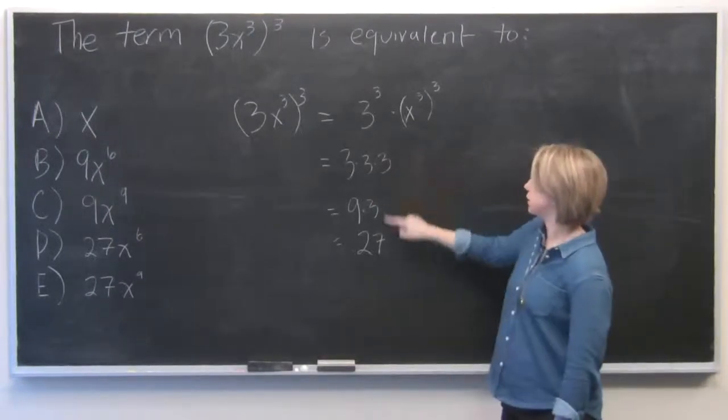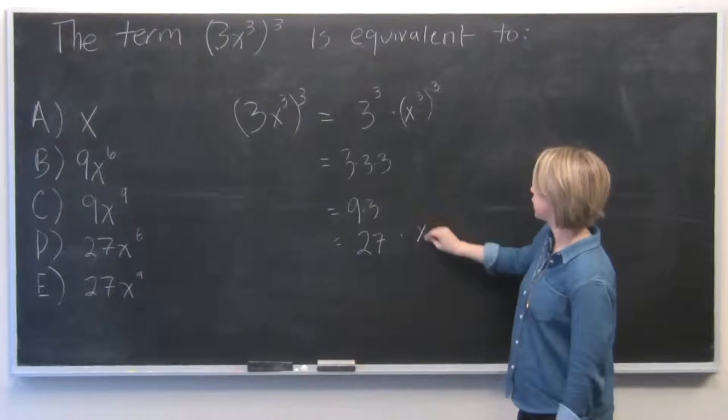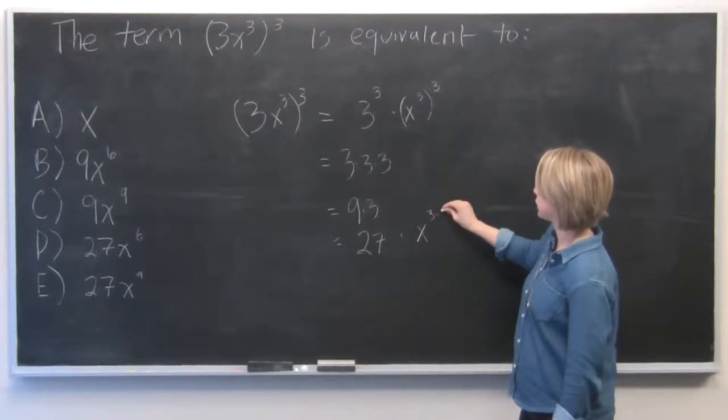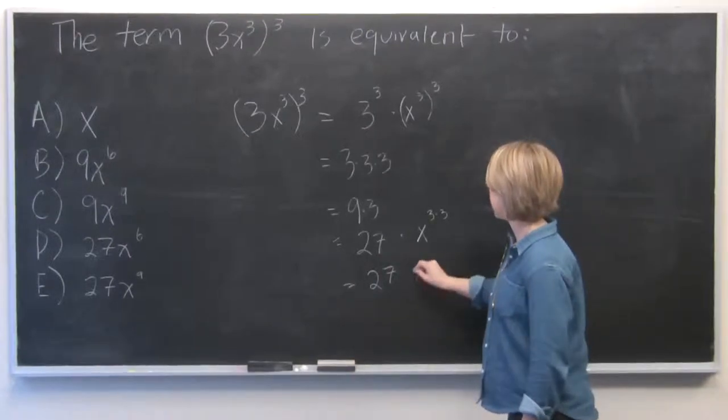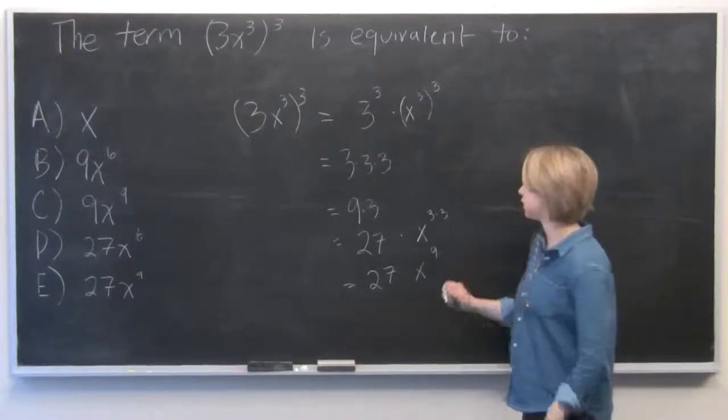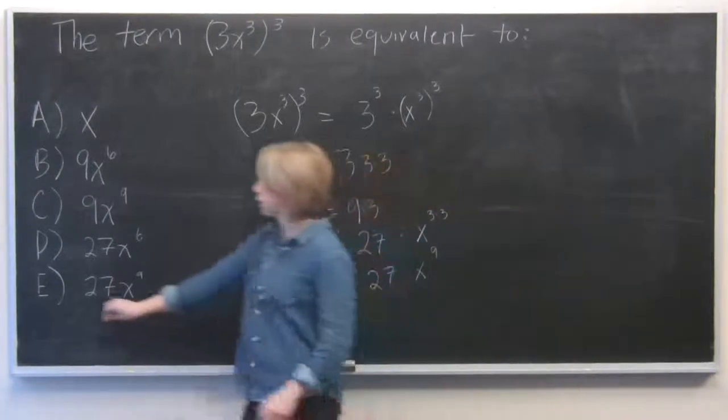So we've got 27 times x to the power of 3 times 3. And so our answer is 27x⁹. So it's right over here.